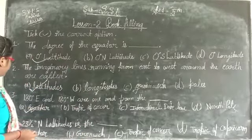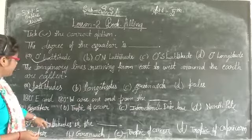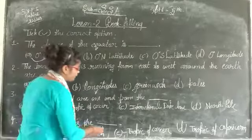After this, question number 4. 23.5 degree N latitude is - what is in this? The Tropic of Cancer.